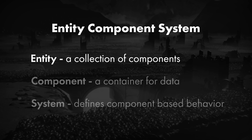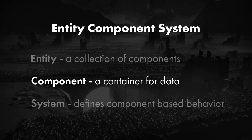An entity is a collection of components. Entities are usually implemented as bare-bones objects, consisting of nothing more than a unique ID. A component is a data container. Components contain one or more value fields that relate to one aspect of an entity. A system operates on a collection of entities that are made up of a specific subset of components. They define your game's behavior and are the only objects that actually contain any logic.